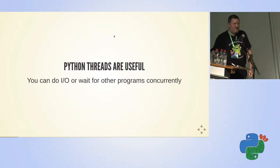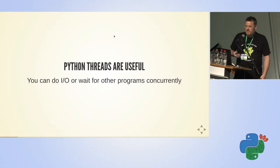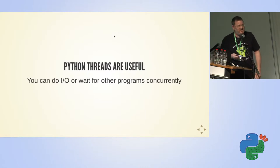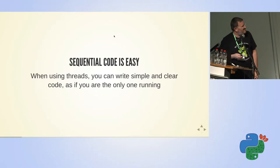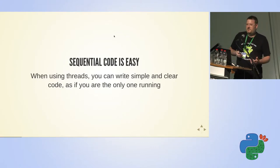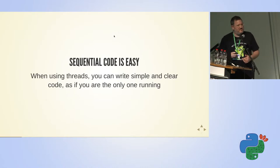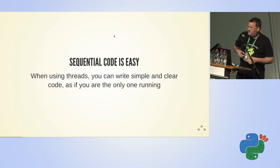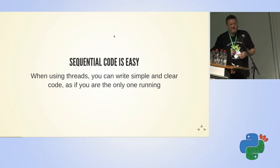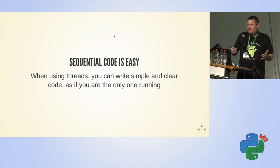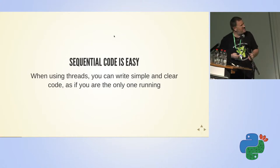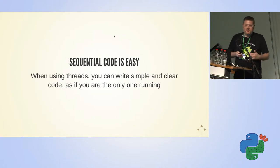So Python threads are actually useful, and we can do a lot of stuff concurrently, just not run Python code simultaneously. When we're using threads, we can use really simple code. We don't need all the complexity of promises and callbacks and async/await. We can just write simple code as if we are the only code running on this machine. The trouble starts when you have to access shared resources.